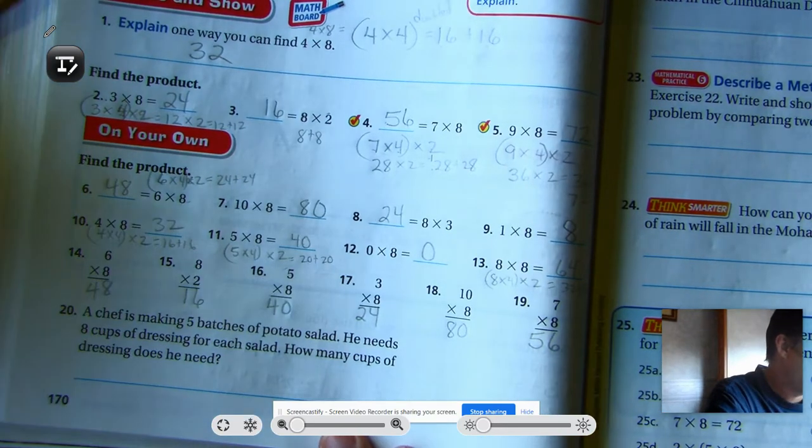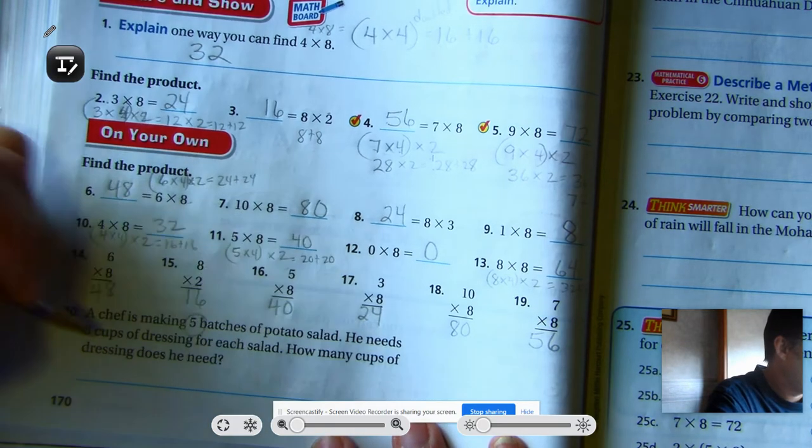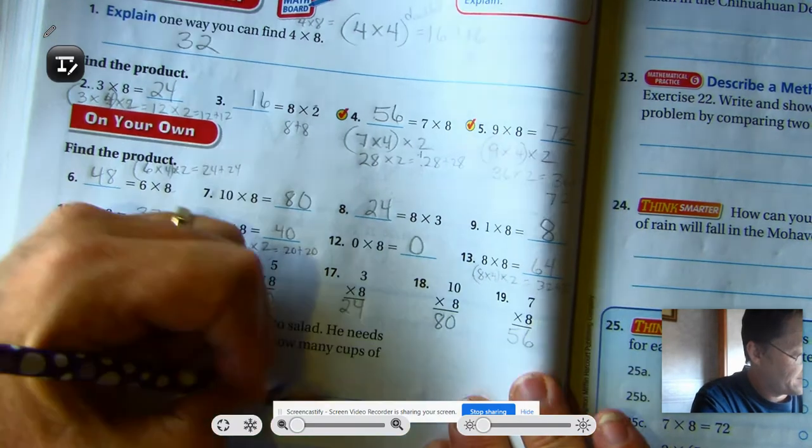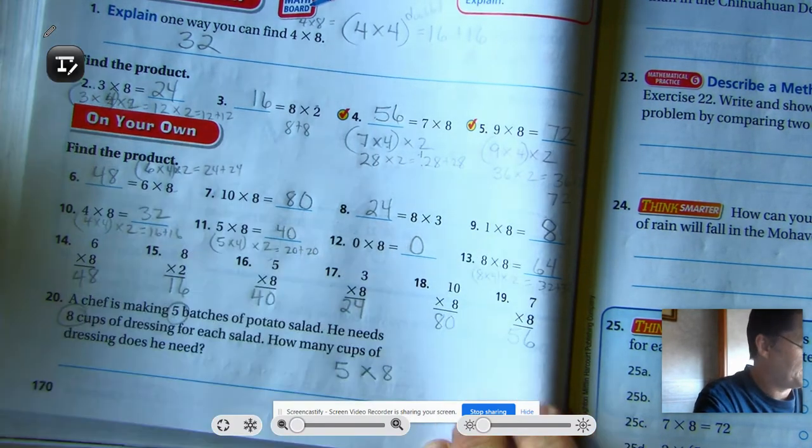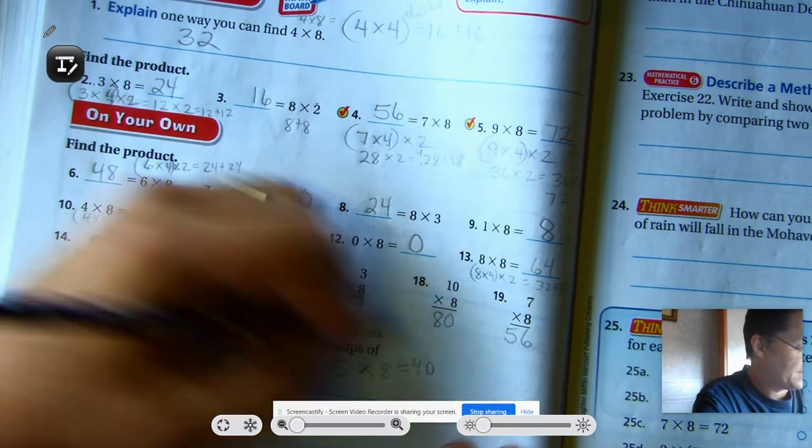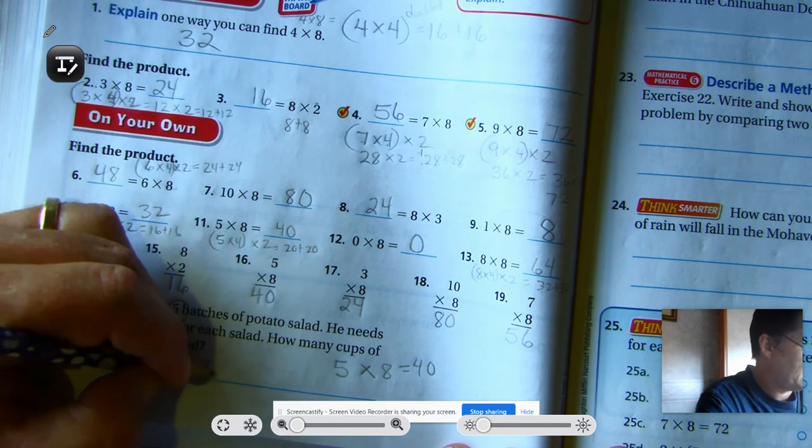A chef is making five batches of potato salad. He needs eight cups of dressing for each salad. How many cups of dressing does he need? Five batches of eight. Five times eight we know is 40. 40 cups of dressing.